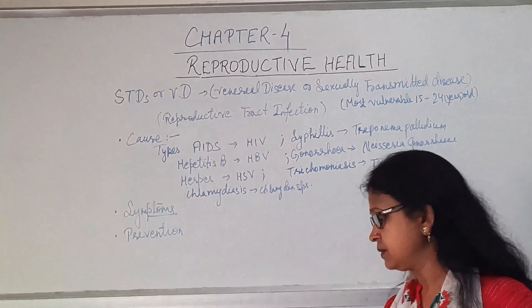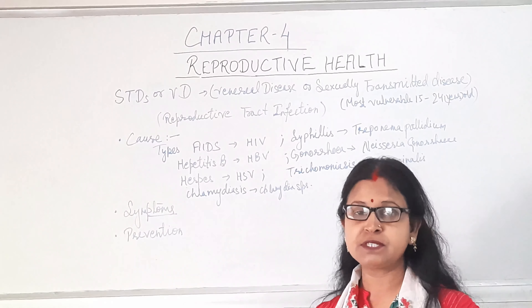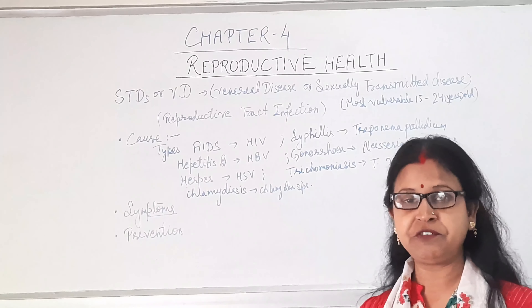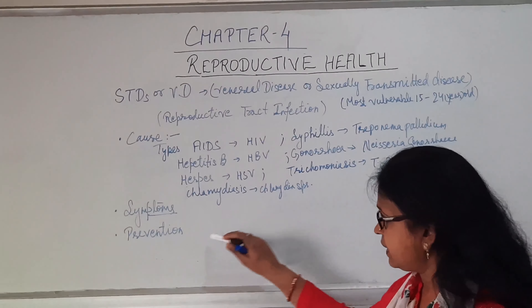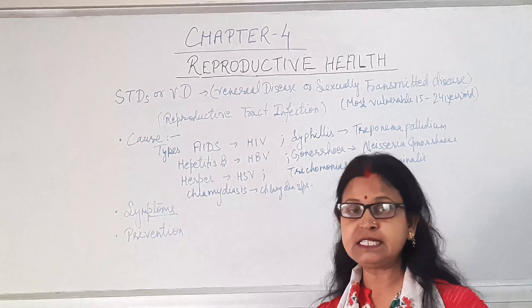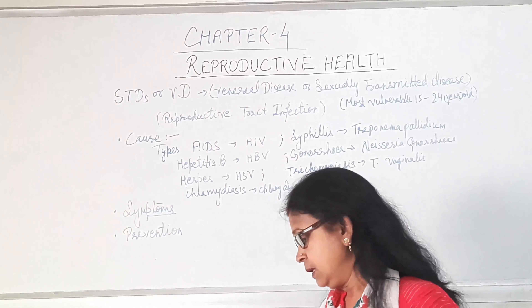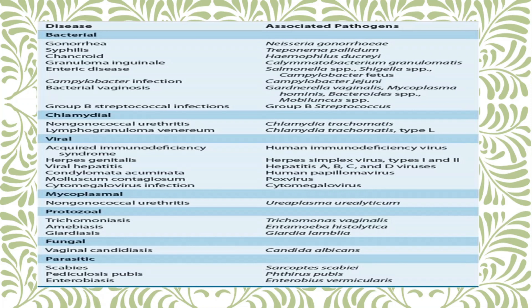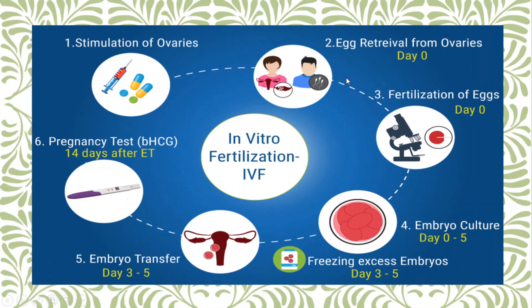Symptoms include different types of itching, fluid discharge, swelling, etc. in the early stage, and later it becomes more dangerous. So it should be diagnosed and treated as soon as possible by professional doctors. Prevention includes avoiding unsafe sex and stopping the use of reusable needles. A table showing different STDs with their pathogens, treatment, and immunization process is shown here.